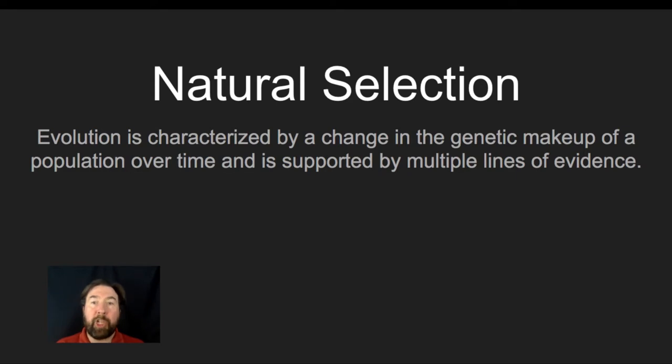Evolution is characterized by changes in the genetic makeup of a population over time and is supported by multiple lines of evidence. We're going to focus on the mechanism associated with evolution as outlined by Charles Darwin and supported over the last 150 plus years since the publication of Origin of Species.